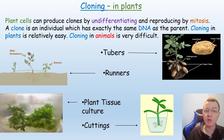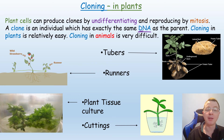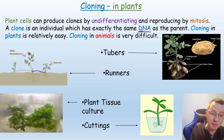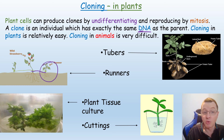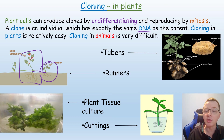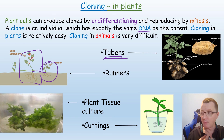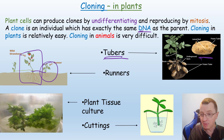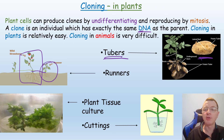Plant cells can produce clones by undifferentiating and reproducing by mitosis. A clone is an individual with exactly the same DNA as the parent, and cloning in plants is relatively easy, whereas cloning in animals is very difficult. Plants can create clones naturally — for example, by producing runners and plantlets, as strawberries do. Potato plants can be cloned naturally by producing tubers underground; if the stem connecting the tuber to the adult plant is broken, that tuber — the potato — can grow into a new plant with exactly the same DNA as the original parent plant.